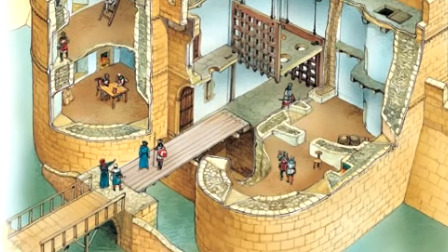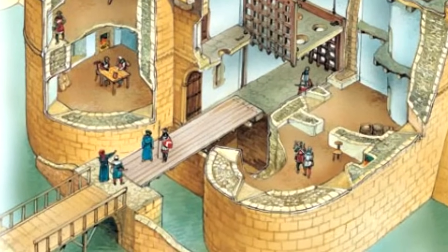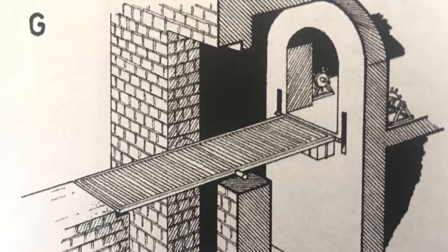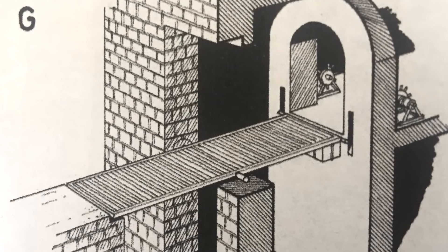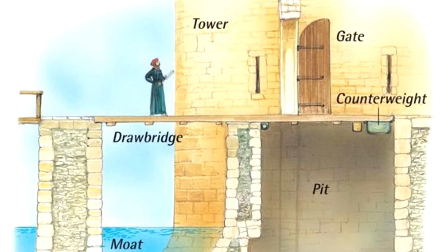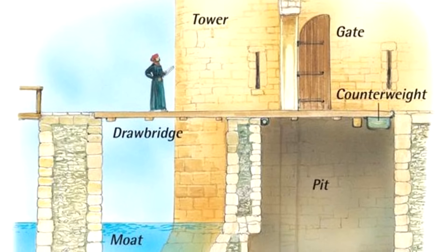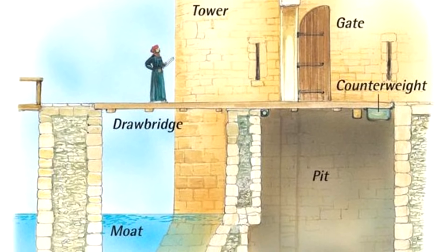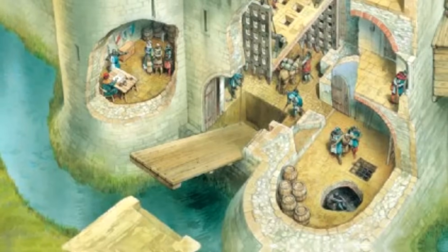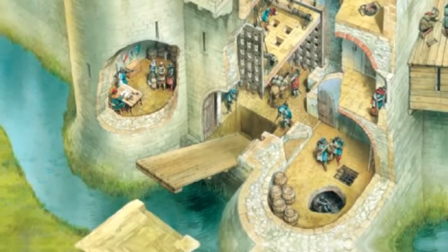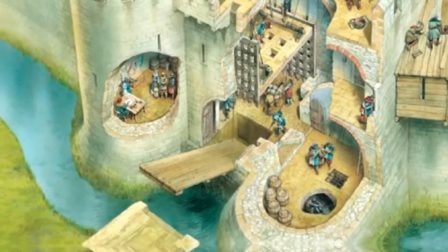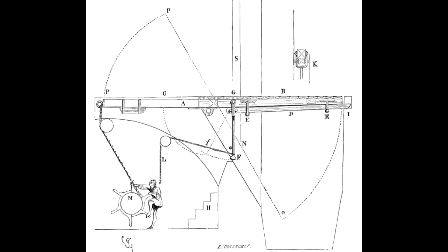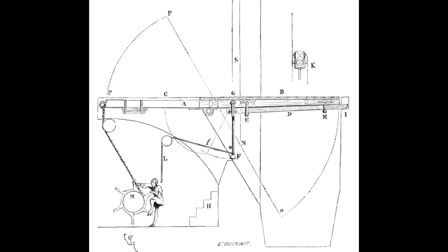Sometimes a drawbridge didn't even have any visible ropes or chains. In this example, you can see that the moving part of the bridge extends into the gate passage. The part of the drawbridge on the inside has a counterweight on it and is held in place by a beam. When the beam is removed, the platform will swing down into the pit below, thus raising the bridge on the outside as well. It's also possible to have a winch in the system to aid in moving the platform.